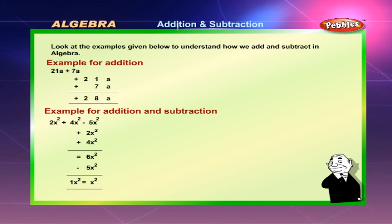Example for addition and subtraction: 2x² + 4x² - 5x² = (2x² + 4x²) - 5x² = 6x² - 5x² = x².